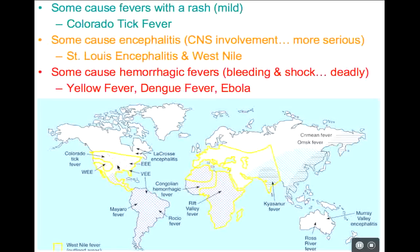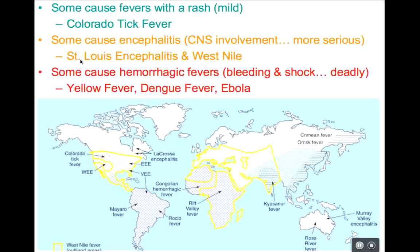Some more serious arboviral infections cause encephalitis, where the central nervous system is involved. Some can start flu-like but develop into encephalitis. The most common in the United States that falls into this group is St. Louis encephalitis, transferred via mosquitoes. It generally causes flu-like symptoms — feeling tired and achy — but can go to the central nervous system and cause encephalitis and even death. A very close relative that we've heard more about is West Nile virus.